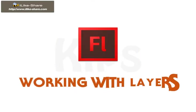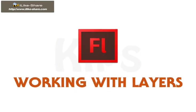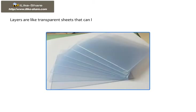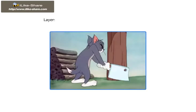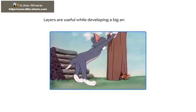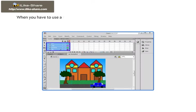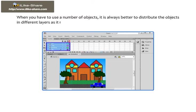Hello students, today we will learn how to work with layers in Flash. Layers are like transparent sheets that can hold objects and are stacked on top of each other. Layers are useful while developing a big animation movie. When you have to use a number of objects, it is always better to distribute the objects in different layers as it makes the work process much easier.